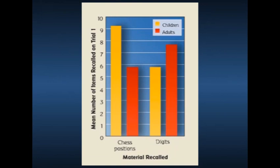So they were also asked to remember chess positions on a chess board. And when asked that, the children outperformed the adults, as you can see on the left-hand side of the graph. That is because the children's knowledge of chess enabled them to chunk the information of the pieces on the chess board, enabling them to more effectively remember them. So you can see that when children do have superior knowledge to adults, it helps them with their memory.